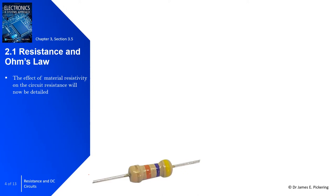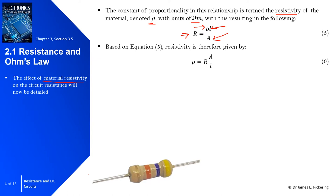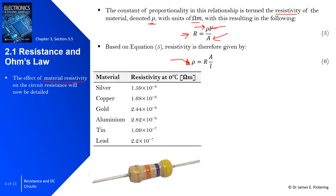Now introducing the effect of material resistivity on circuit resistance. Previously the equation R is proportional to L over A was shown. Now we introduce the constant of proportionality termed the resistivity of the material, denoted by rho, with units of ohm-meters. Rearranging gives rho equal to resistance multiplied by area over length. Different materials have different resistivity values, so using a different material gives a different value for resistance.